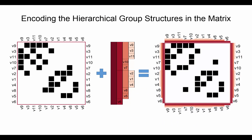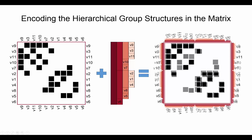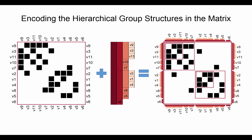To visualize the hierarchical group structure integrated with a graph, our technique uses a matrix representation with attached icicle plots. The matrix has an improved encoding of the hierarchical group structure, which is based on indentation, nested contours, and a mapping of edge density within and between subgroups.